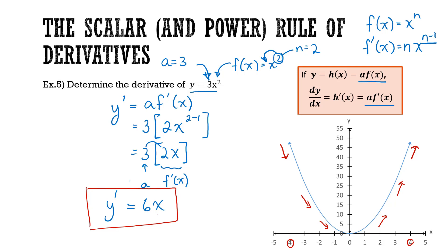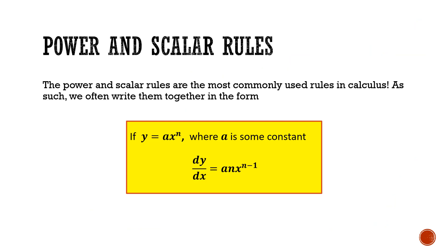In the last two examples, we had a scalar coefficient multiplying a function, and each time we used the power rule for that function. Using the scalar and power rule together is really common, so we often combine them: if y = a times x to the power of n, then the derivative is a times n times x to the power of n minus 1. This is the combined form you'll be using most often in calculus.